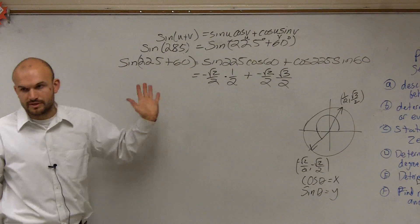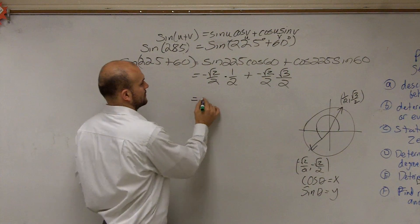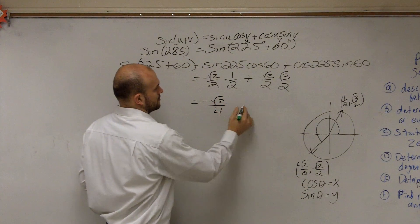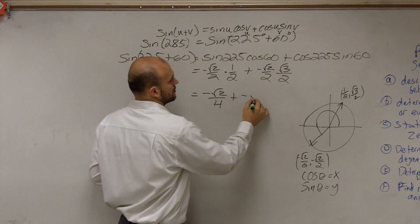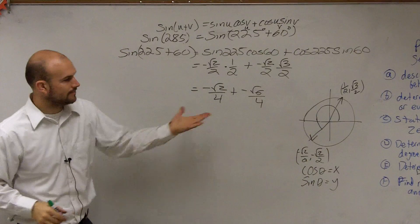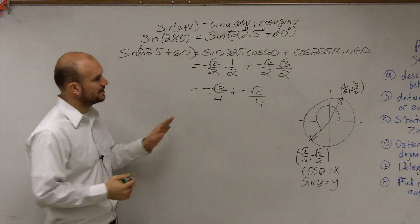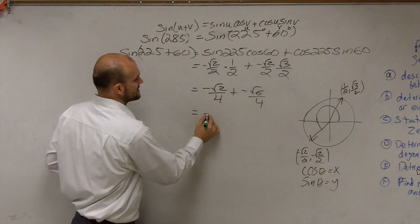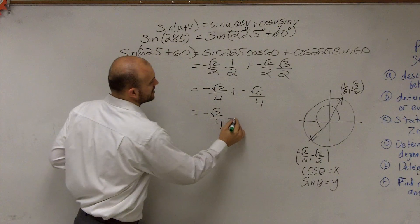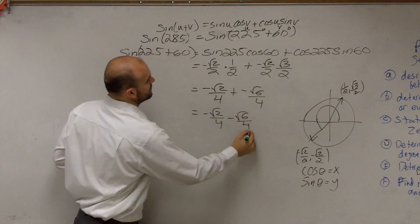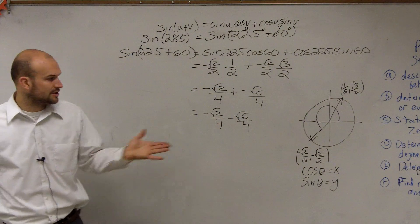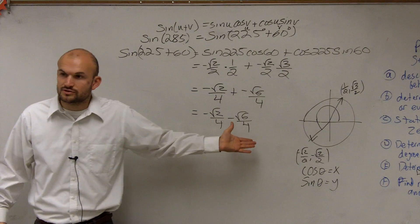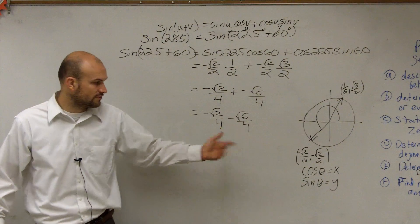Now I'm going to multiply across. Then I'll rewrite this as -√2/4 minus √6/4. What I notice is they both have a common factor of -√2/4.